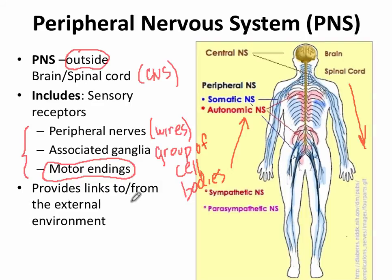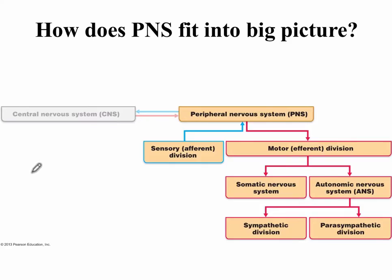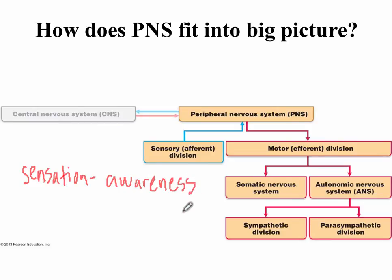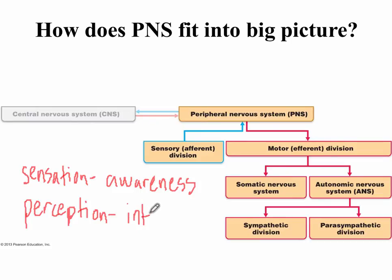The job of the peripheral nervous system is to provide links to and from the external environment. Two important characteristics that describe sensory receptors are sensation — referring to awareness of our environment or a stimulus — and perception, which is based on interpretation of the sensory information sent to the brain.